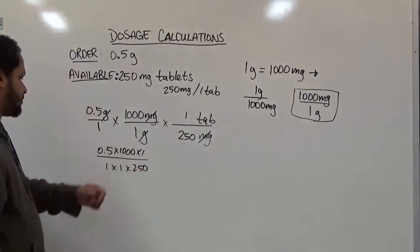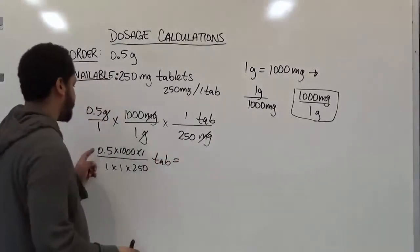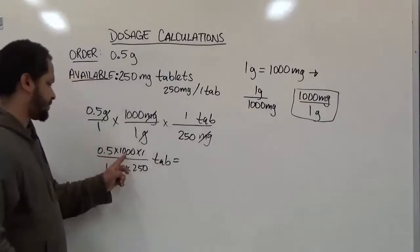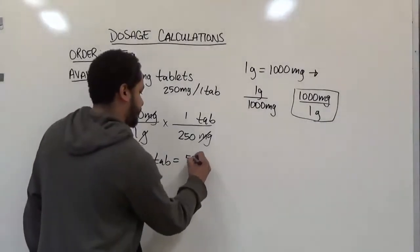Usually we just multiply what we have together and resolve it at the end. Let's multiply the top and bottom. 0.5 times 1,000 is 500. 500 times 1 is just 500.